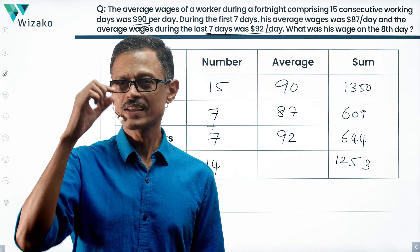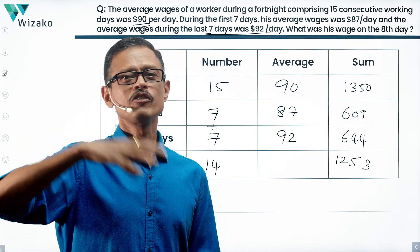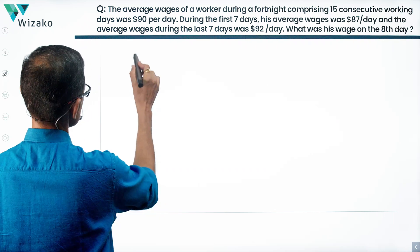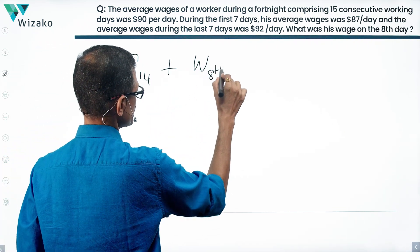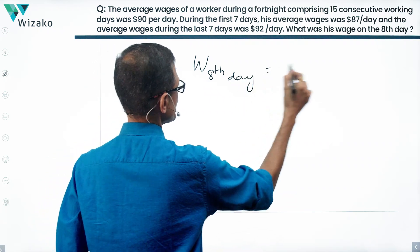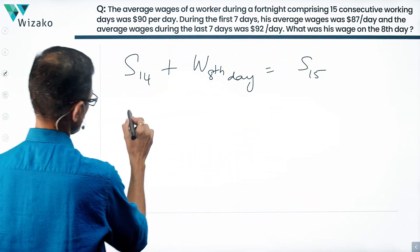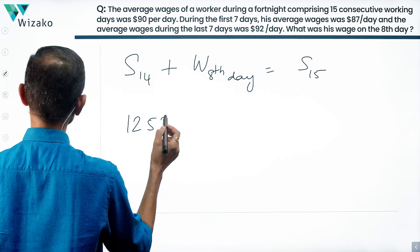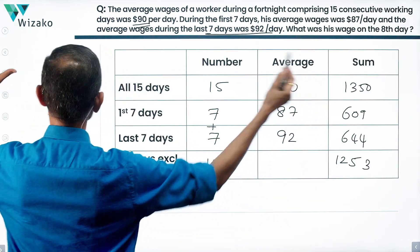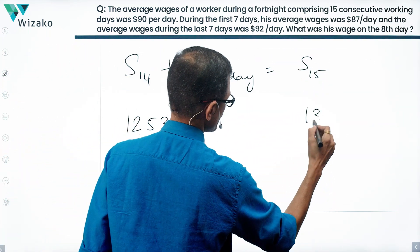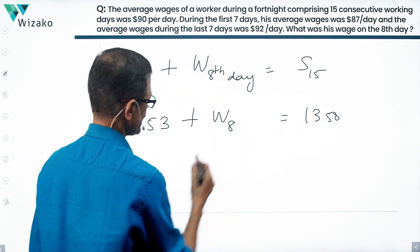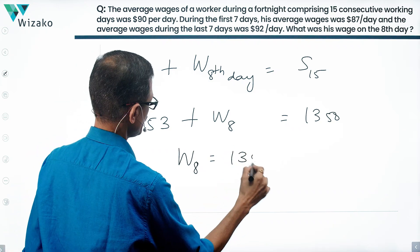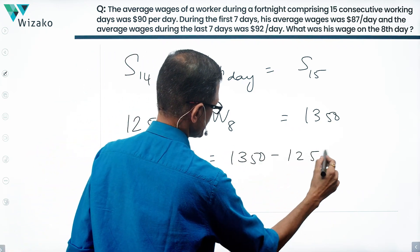One day that's missing is the eighth day. If you add that, we should get the sum for all 15 days, right? So sum for 14 days plus wages of eighth day should give us sum for all 15 days. 1253 is the number that we had here. This is equal to 1350, which is equal to the wage for the eighth day.